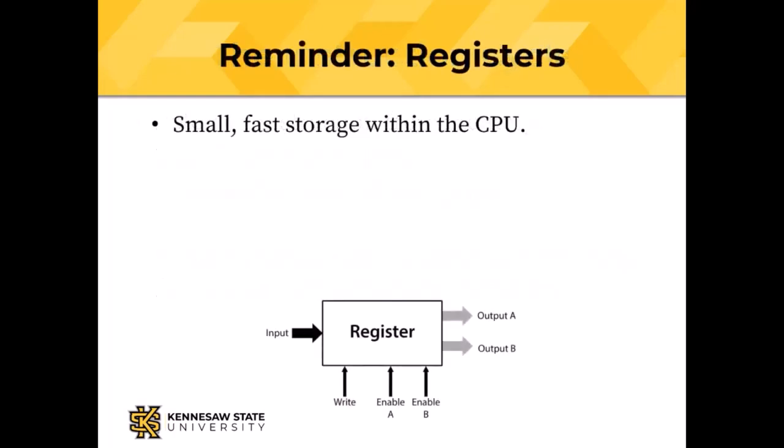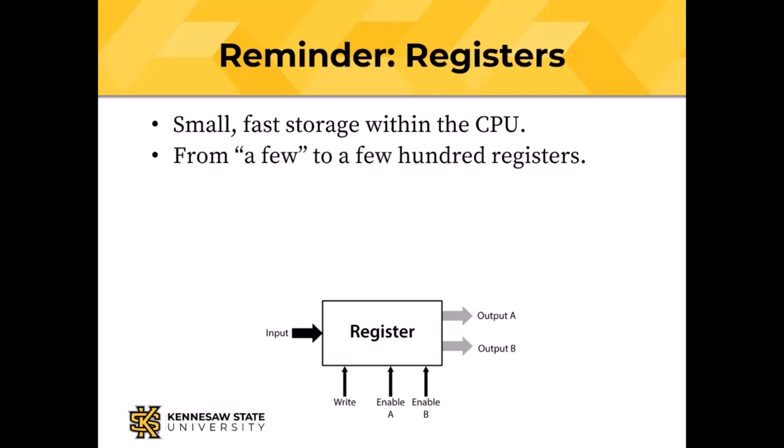Registers are fast, small storage within the CPU. A modern CPU is likely to have a few hundred registers. The Intel 8008, which started all of what is Microsoft and x86, had something like 16 registers. We're going to design a computer that has five of them, only one of which can actually be used for data.